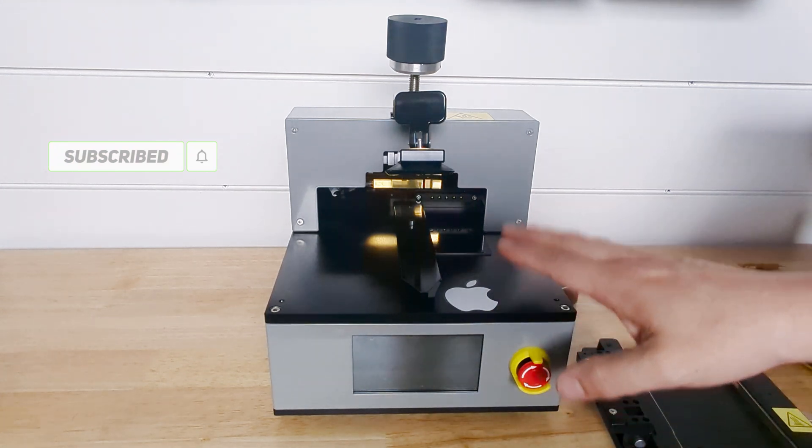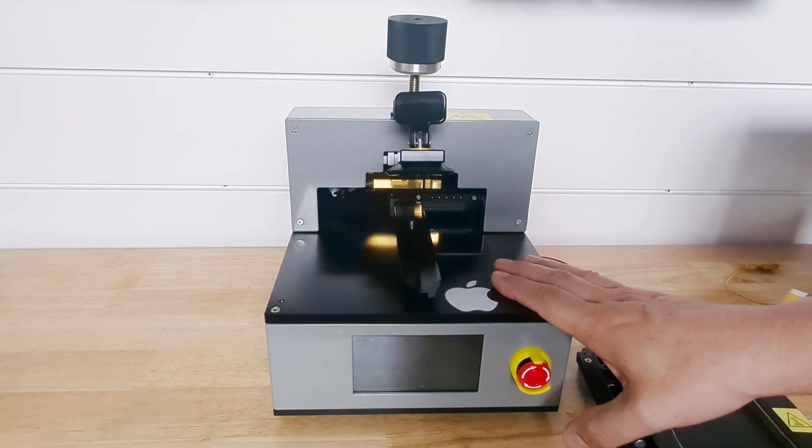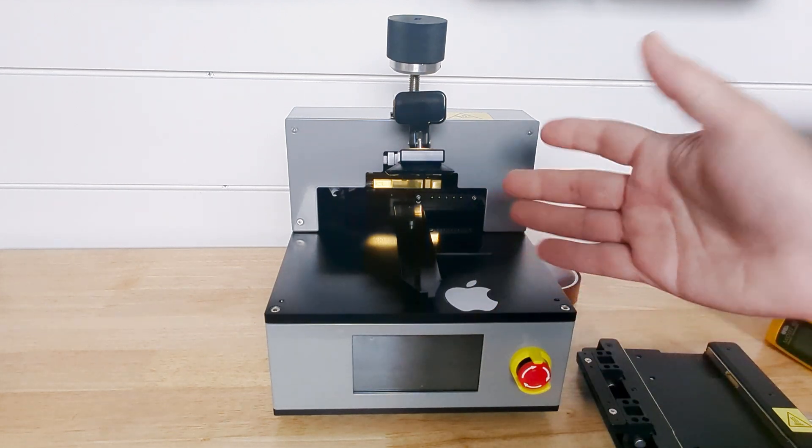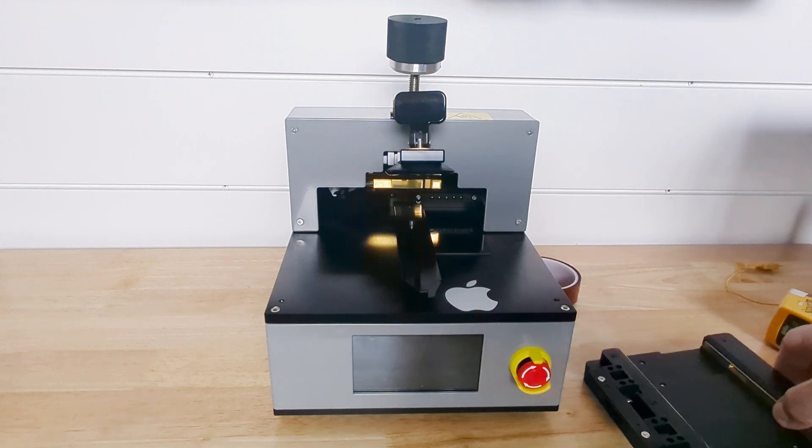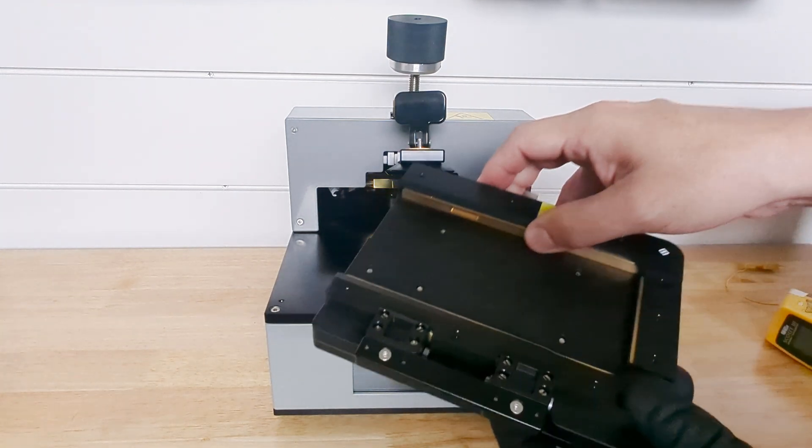So today we're going to take the Apple screen separator machine and answer two questions. One, how does it exactly work, and two, how hot does the actual mold get?